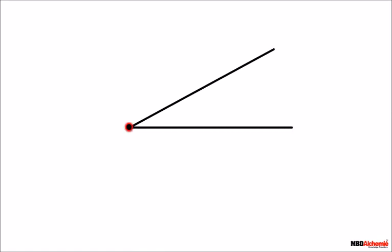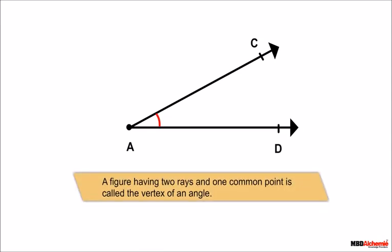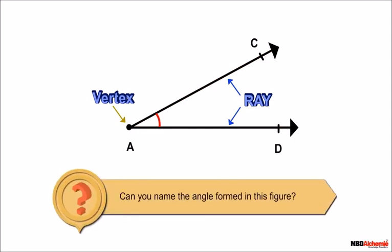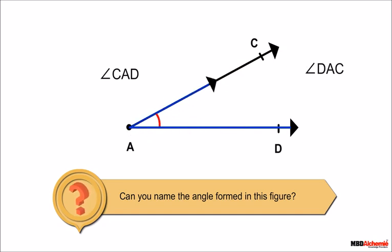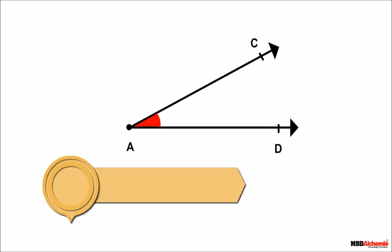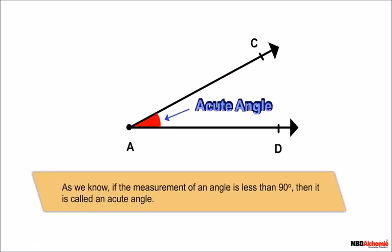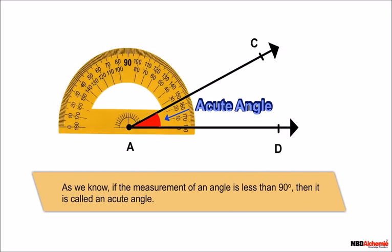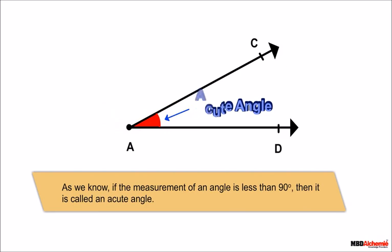If we draw two rays from the same point in different directions, we get an angle. A figure having two rays and one common point is called the vertex of an angle. The angle formed in this figure is angle CAD or angle DAC. This forms an acute angle, because if the measurement of an angle is less than 90 degrees, then it is called an acute angle.